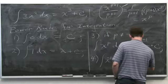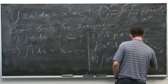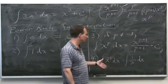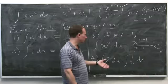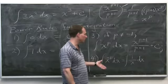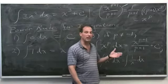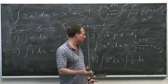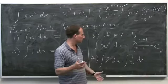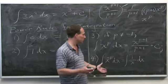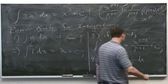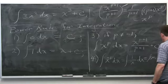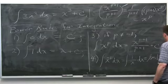Does that mean there is no anti-derivative of x to the minus 1, or 1/x dx? No. You know a function whose derivative is 1/x — natural log of x. In fact, natural log of the absolute value of x is the most general anti-derivative, because that works when x is positive or negative. So you get the natural log of |x| plus a constant.